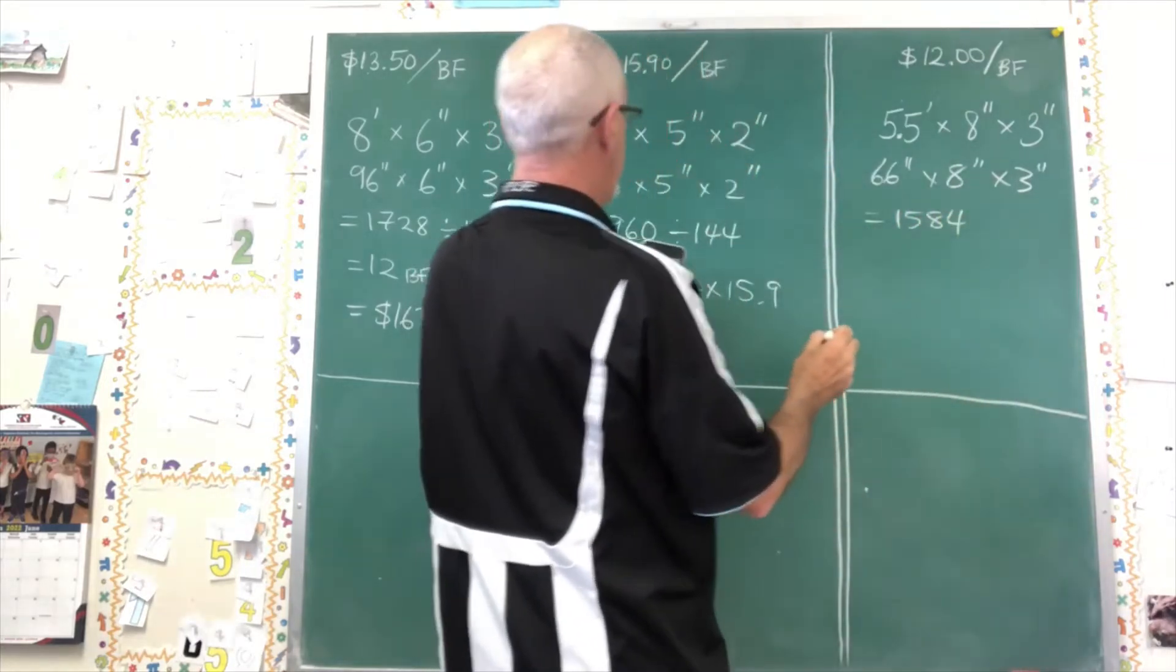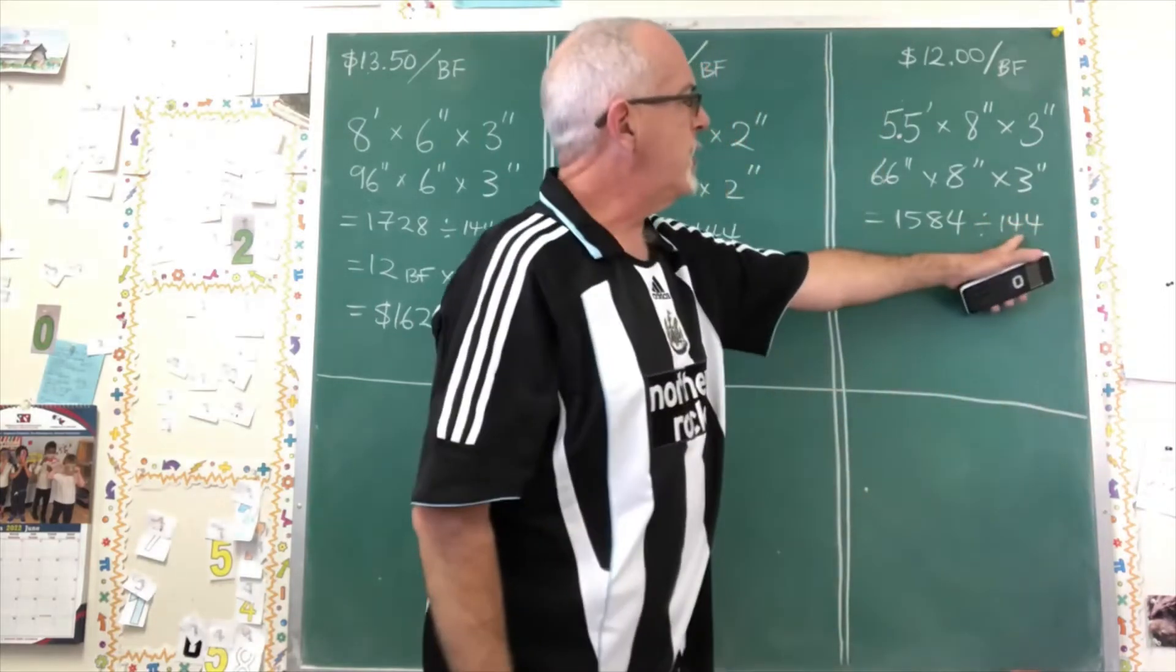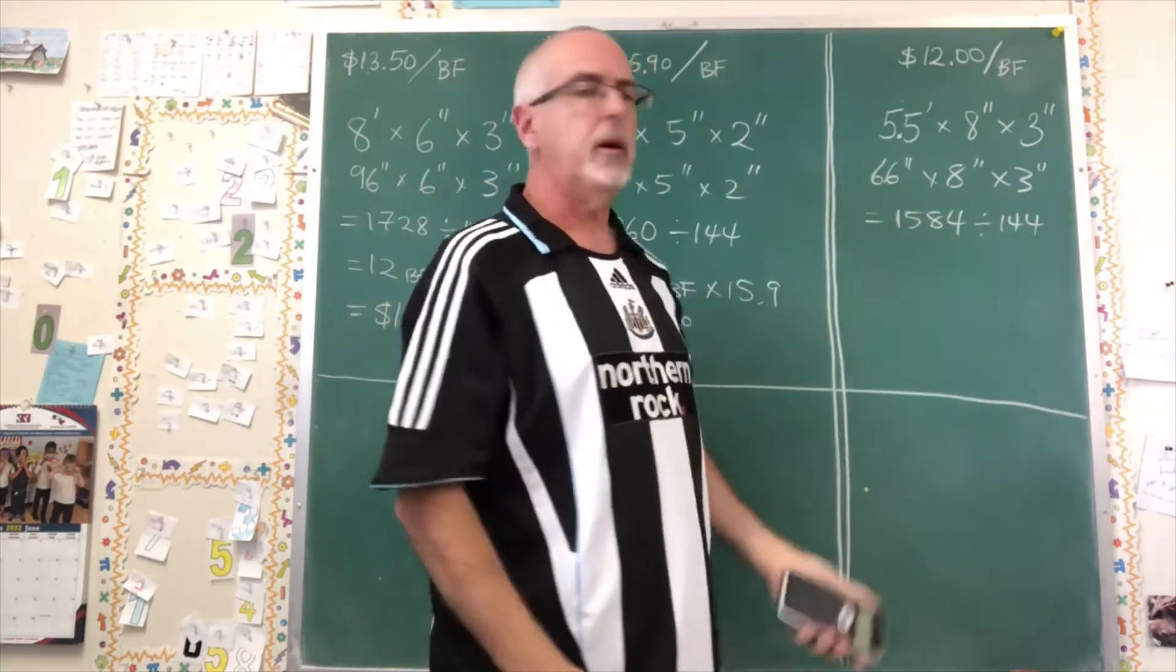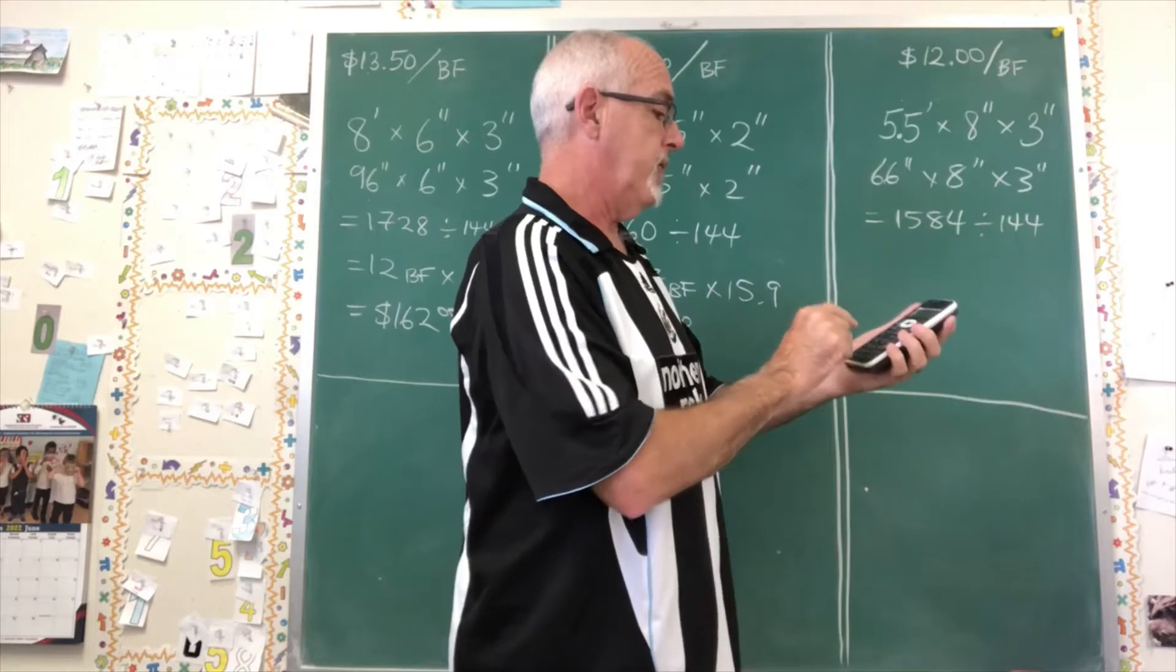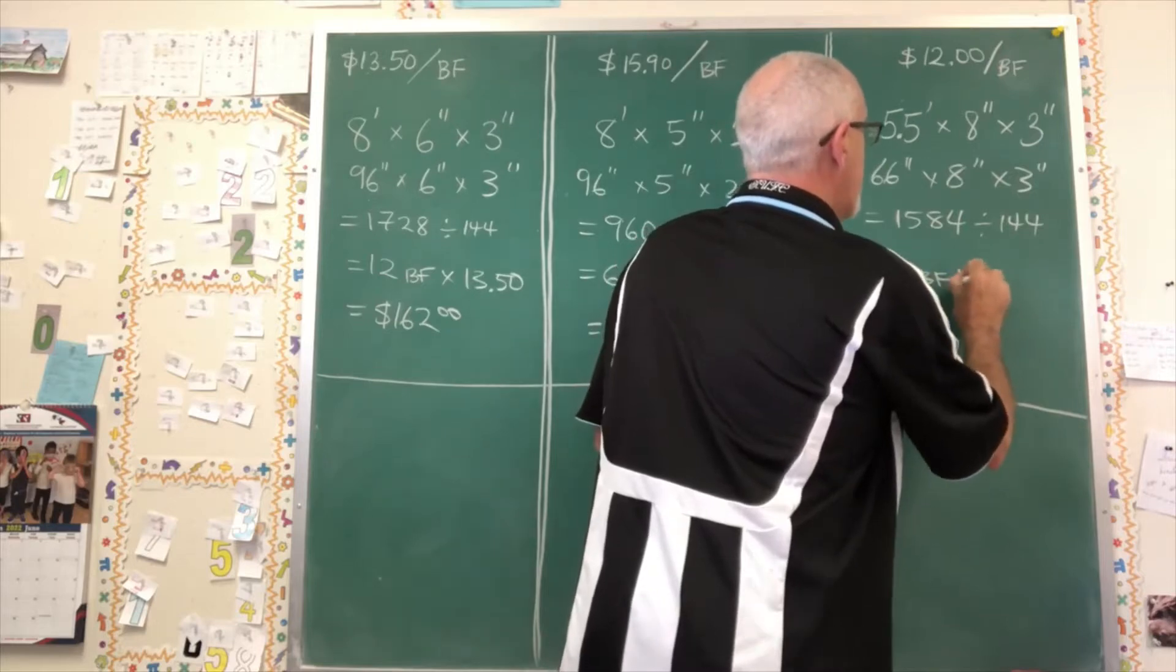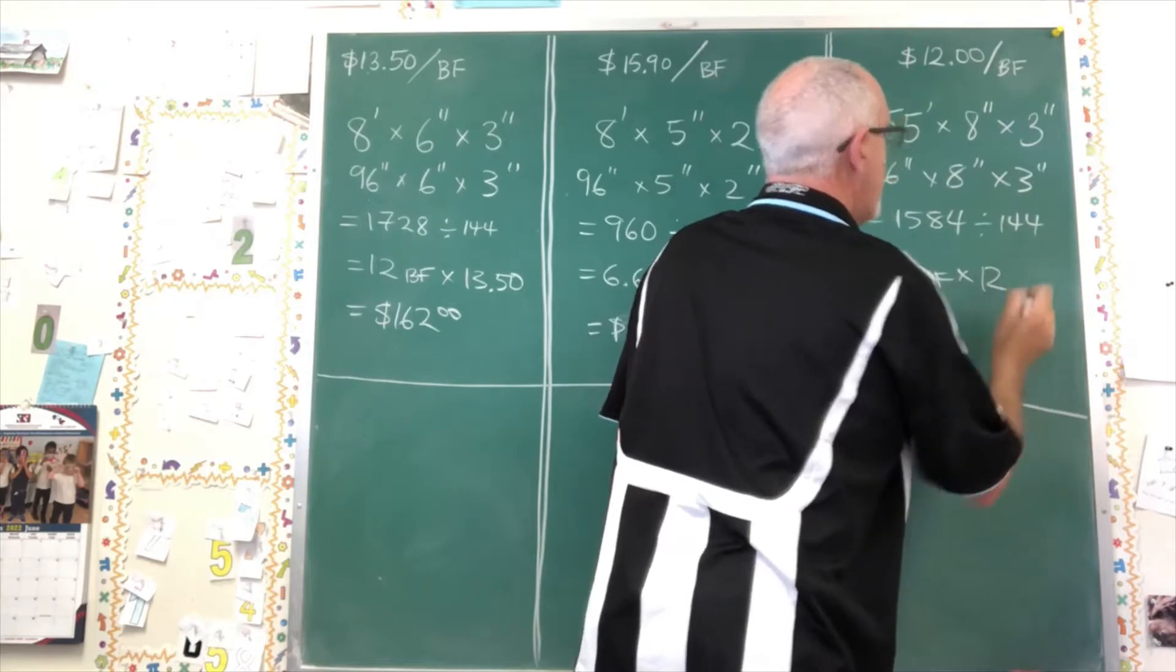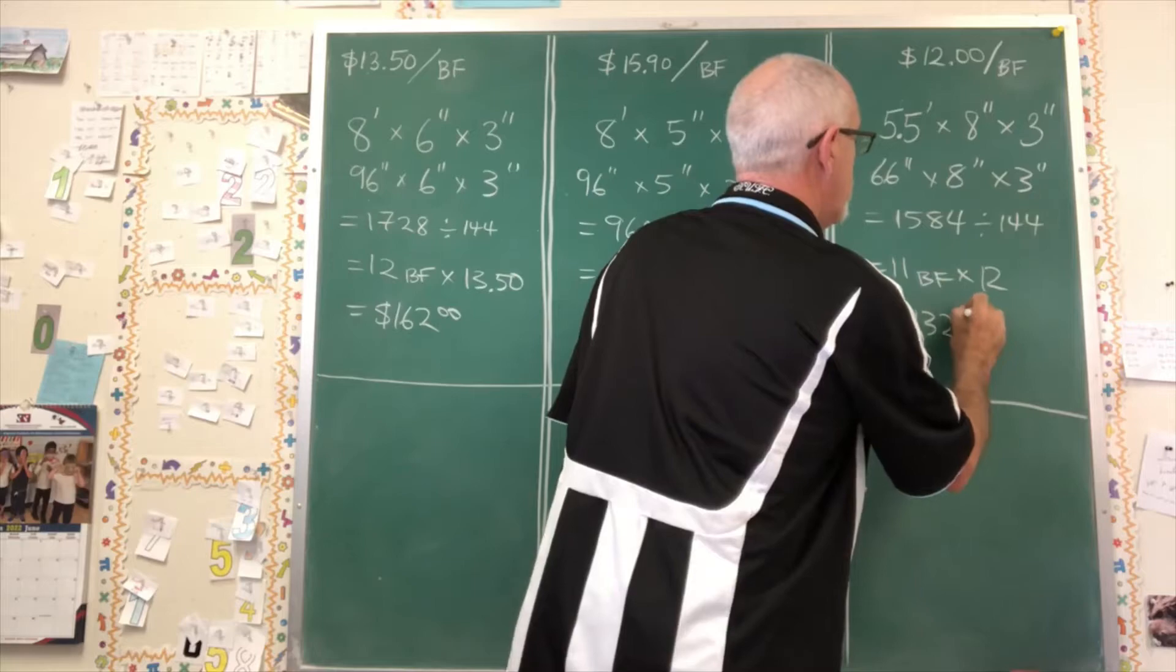That I have to divide by 144. 10 times 144 would be 1440, not much less than this, so I'm guessing it's going to be about 11. 1584 divided by 144 equals, and it's exactly 11 it turns out. So I have 11 board feet and I'm multiplying it by the price. This time it's $12. And that I can do in my head. So that's going to be $132 for this piece of wood.